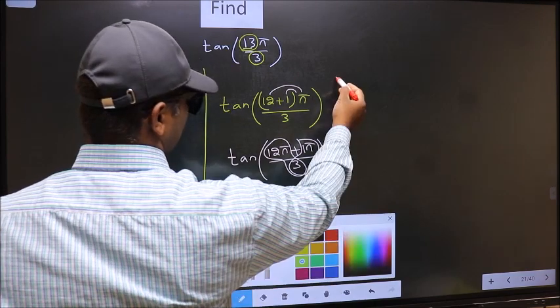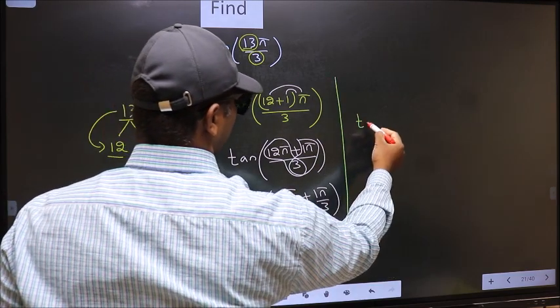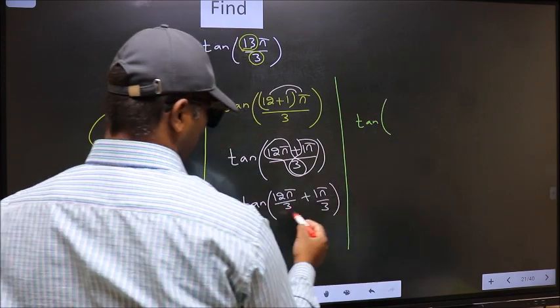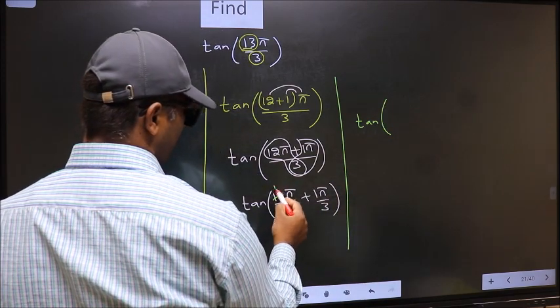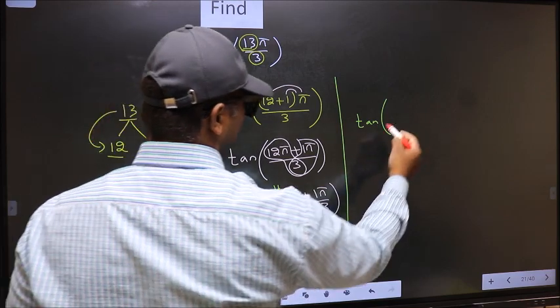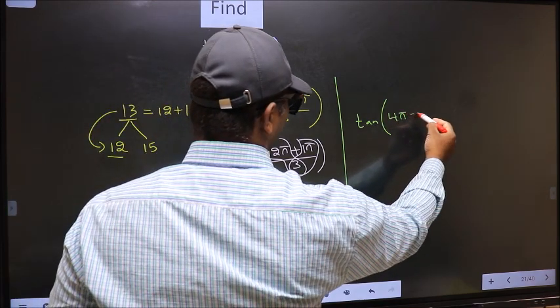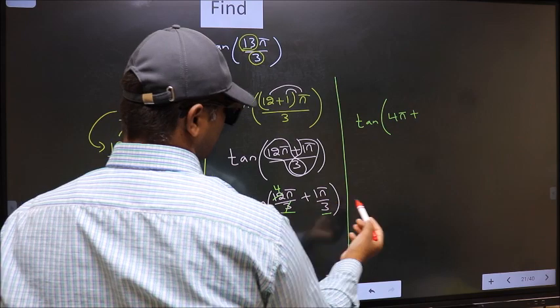Next, tan. Now here we should cancel, 3 goes into 3 once, 3 goes into 12 four times. So we get 4π plus this, no change.